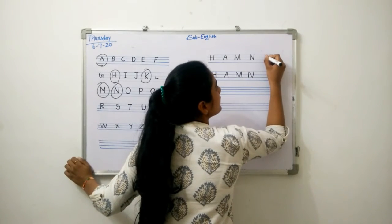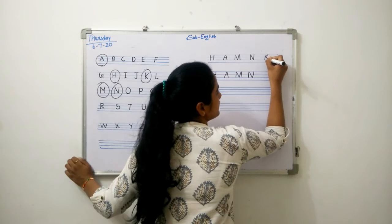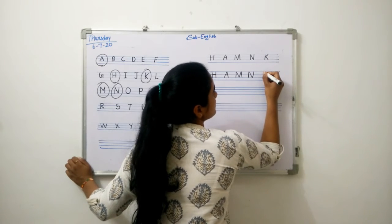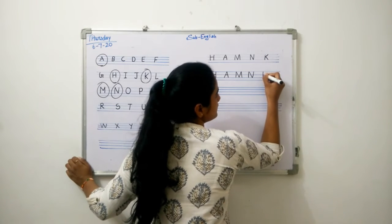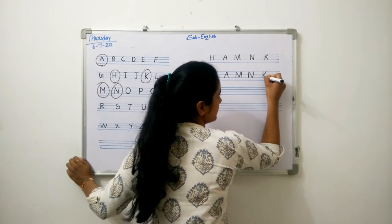Next letter is K: standing line, slanting line, slanting line. Standing line, slanting line, slanting line.